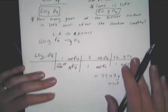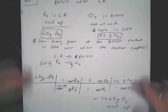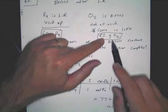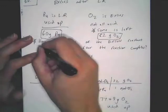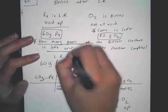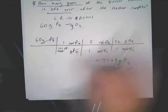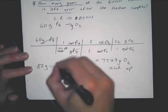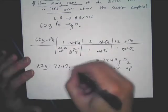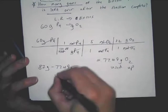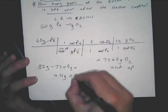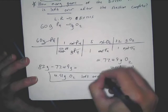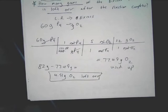So, remember, we said P4 is used up, O2 is left over. We started with 82. The problem said, how many grams is left over? So, if you start with 82, you use up 77.49. How much is left over? 4.51 grams of O2 left over. And that is the actual answer to the problem.